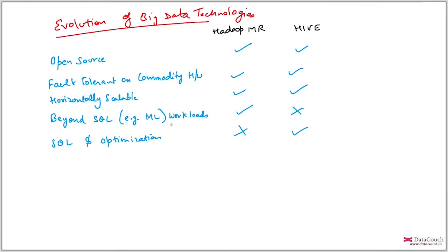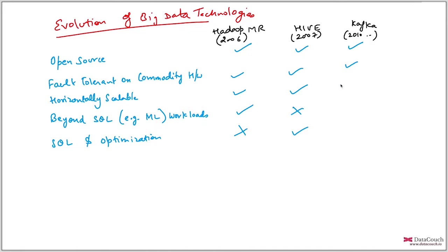An interesting thing happened — Kafka came into picture. This was around 2006 when Yahoo's Doug Cutting released MapReduce. Kafka started in 2010 and version 1.0 was released around 2018, evolving from a pub-sub system into a complete event streaming platform. Kafka provides open source, fault tolerance on commodity hardware, horizontal scalability. However, beyond SQL workloads like machine learning support are not there in Kafka, and SQL optimization is limited.